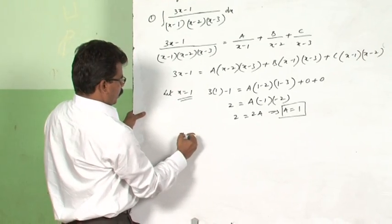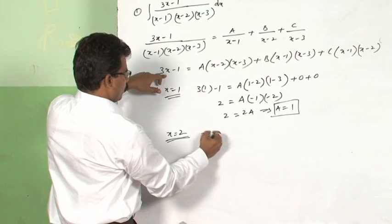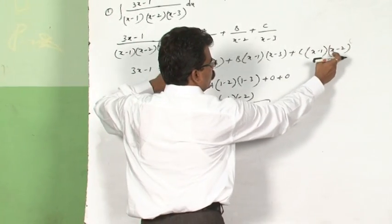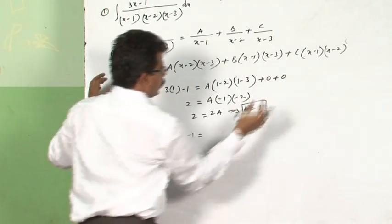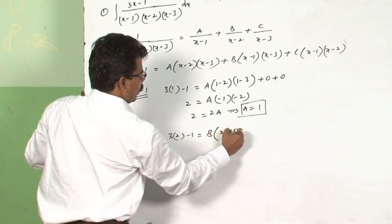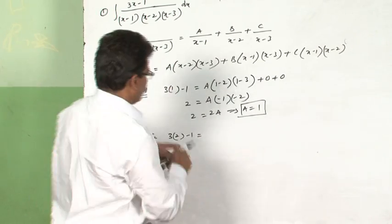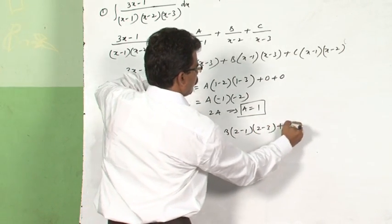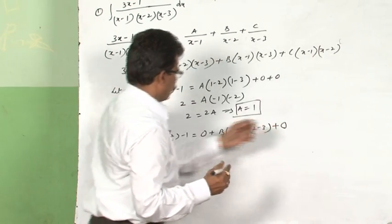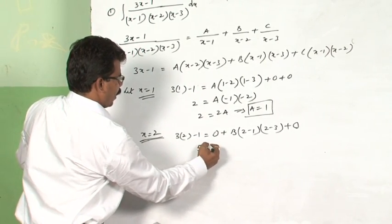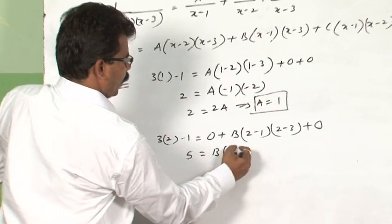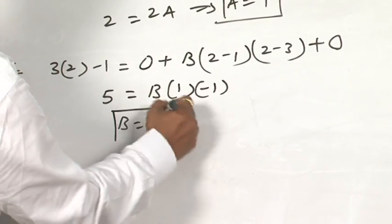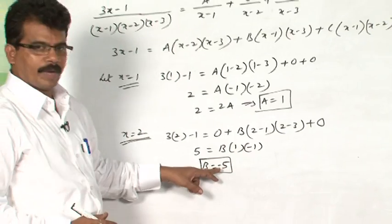Similarly, let x = 2 to eliminate the A and C terms. The LHS becomes 3(2) − 1 = 5. The first and third terms become 0, leaving B(2 − 1)(2 − 3) = B(1)(−1) = −B. Therefore 5 = −B, which gives B = −5.